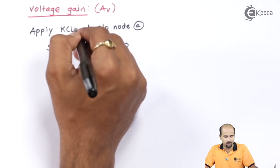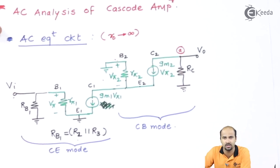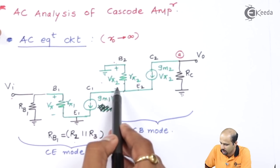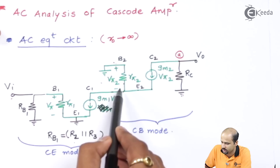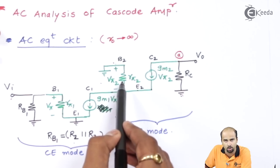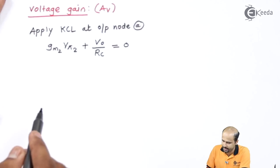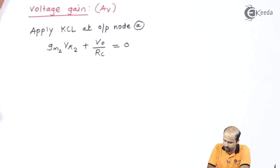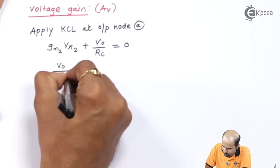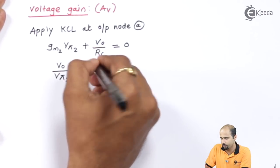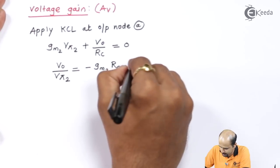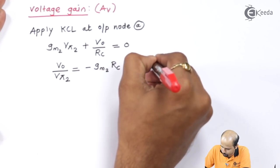Now, vπ2 is acting as an agent. vπ2 is at the input side of stage 2. From the KCL equation we can solve for the ratio of vo to vπ2. We get: vo divided by vπ2 equals minus gm2 times RC. This is Equation 1.